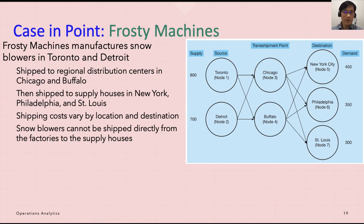The available supplies at the factories, the demands at the final destinations, and shipping costs are shown here in this diagram. Notice that snow blowers may not be shipped directly from Toronto or Detroit to any of the final destinations, but must first go to either Chicago or Buffalo.